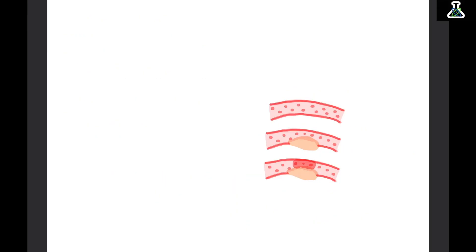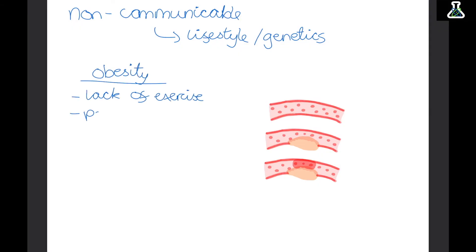Now at the start of the video, we said that non-communicable diseases were diseases that cannot spread from person to person. So this means they're mainly caused by lifestyle or genetics. So the first lifestyle choice can be obesity. And this can be caused by lack of exercise or a poor diet. And obesity has been clearly linked with lots of different health problems. Now one measure of obesity is BMI.